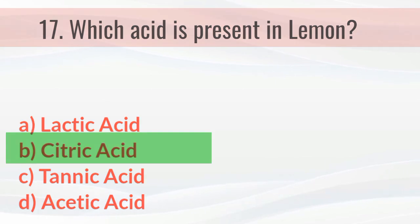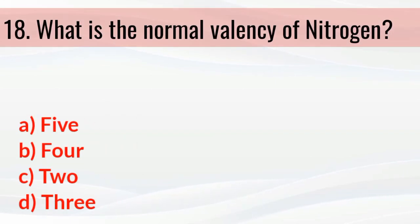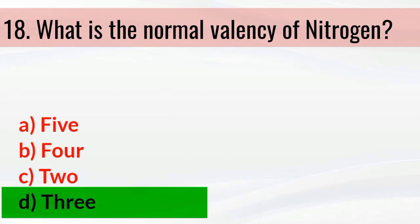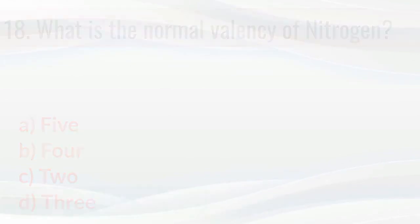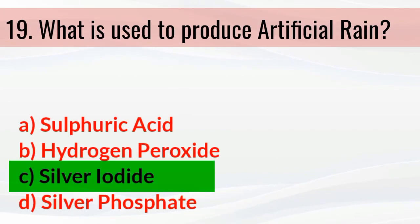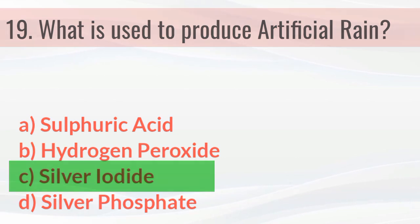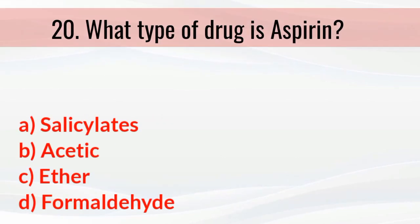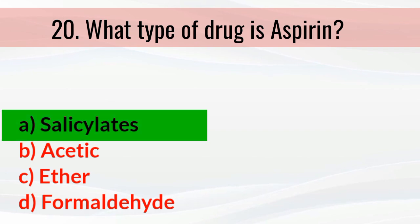What is the normal valency of nitrogen? The right answer is three. What is used to produce artificial rain? The right answer is silver iodide. What type of drug is aspirin? The right answer is salicylates.